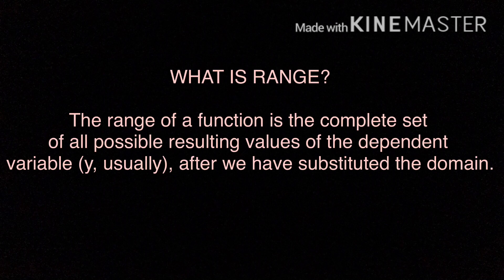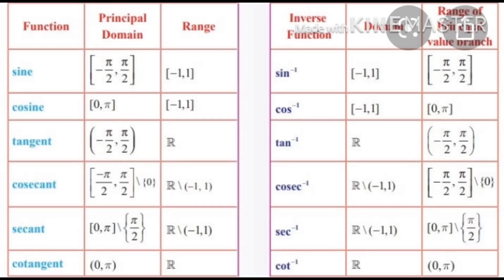Now these were the definitions that we had to know before starting our topic. On the left hand side is the table for the domain and range of simple trigonometric functions. As we all know, trigonometric functions are not one-one and not onto, which means for different inputs they may have one value. It implies that it is difficult to find an inverse, so in order to find an inverse we fix their domains.